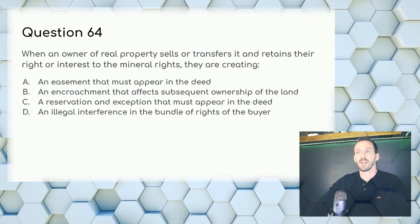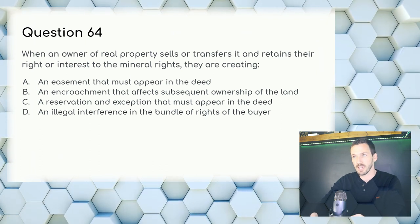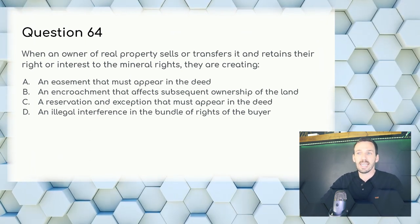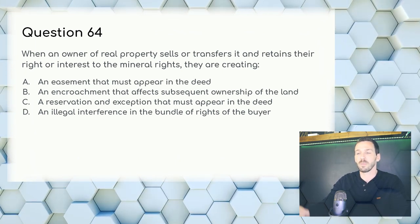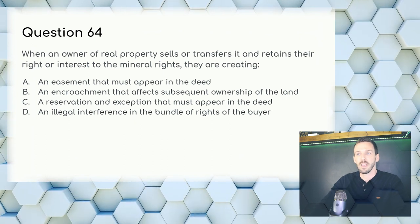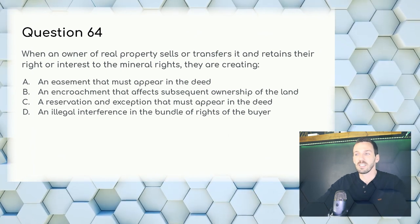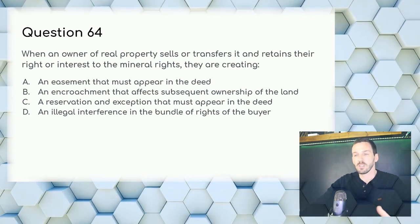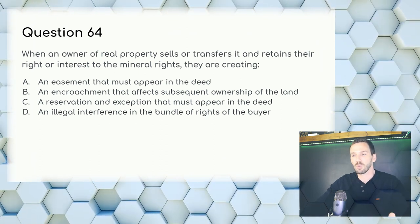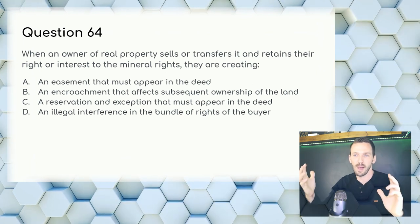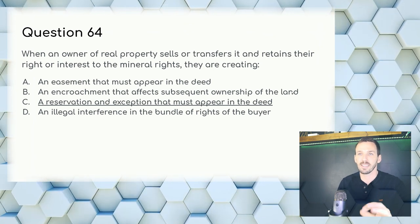Question 64: When an owner sells real property and retains their right to mineral rights, they are creating — an easement is more of a right-of-way; an encroachment is more of a structure built across property lines. Answer: C — a reservation and exception that must appear in the deed. And it is legal.